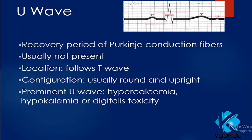Sometimes you may see U waves, but these are not usually present on ECGs. The U wave follows the T wave and is usually round and upright. A prominent U wave indicates hypercalcemia, hypokalemia, or digitalis toxicity.